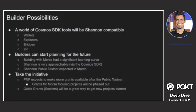PNF is already expecting grants to start becoming available after the public testnet. The focus of grants is shifting toward Shannon versus Morse. Grants specifically focused on Morse work are going to be phased out in the coming weeks. Shannon grants — because Shannon's built off the Cosmos SDK — open up a lot of possibilities. Quick grants, also known as sockets, will be a great way for new projects to get started. There's a whole new world of possibilities opening up through Shannon being built with the Cosmos SDK.